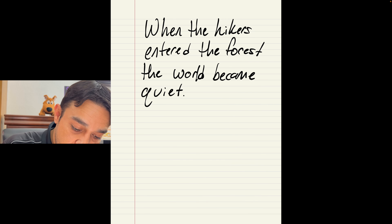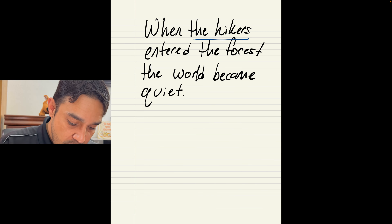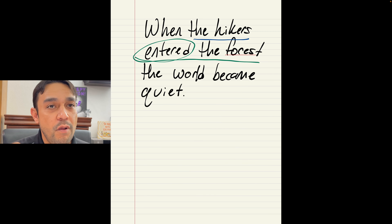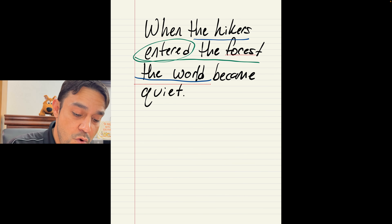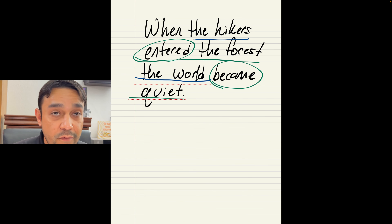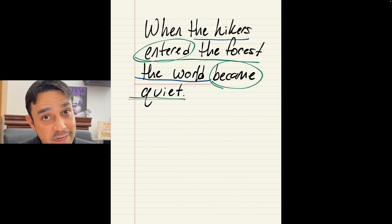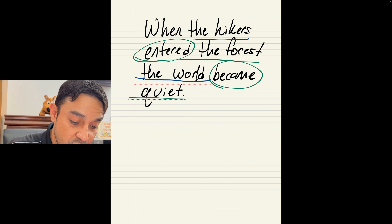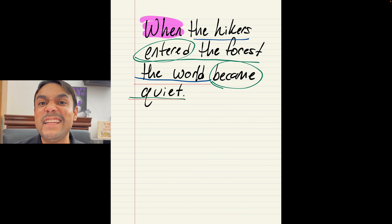Let's take a look. Our first subject is 'the hikers' — what about the hikers, what's the predicate? They entered the forest. But already I don't see any punctuation, and I see another subject: 'the world.' What did the world do? Became quiet. We have two subjects and two predicates that aren't separated by anything, and they have to be at least separated by some sort of punctuation — especially when we have the word 'when' in front. So we're going to take a look at this. That's gonna do us a really big favor. One, one, one, my job is done.